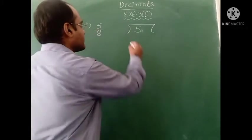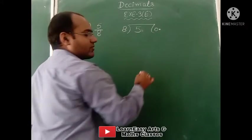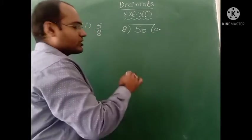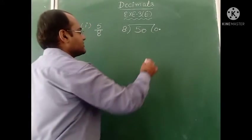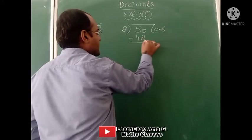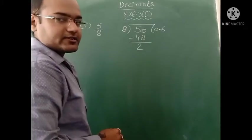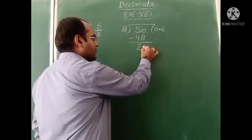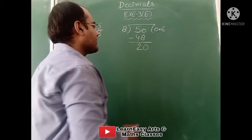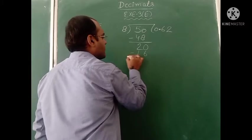First we take decimal in the answer, then we add 0 here. Now this is 50. 8 times 6 is 48. On subtracting, we get remainder 2. Decimal is already there in the answer, so we can add 0 here. 8 times 2 is not 16 — reading the 8 table again: 8 times 2 is 16 is not 60 — so remainder will be 4.